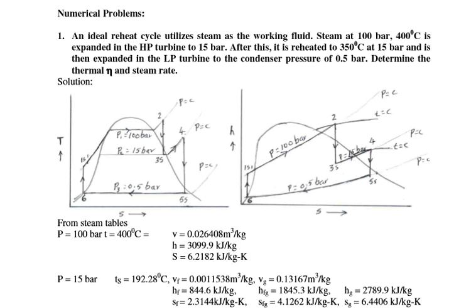This numerical belongs to the reheat Rankine cycle. The input given: steam having 100 bar and 400 degree Celsius — this is superheated steam because the temperature is greater than 100 degree Celsius. The steam enters the high pressure turbine, then is reheated at 350 degree Celsius at 15 bar, then expanded in the low pressure turbine. The condenser pressure is given. We need to determine the efficiency of the cycle and steam rate.